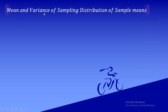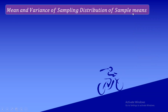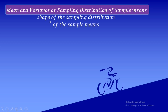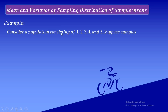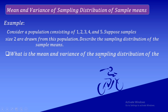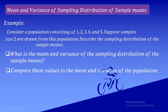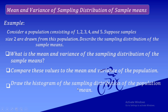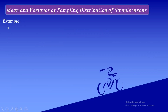This presentation is about finding the mean and variance of the sampling distribution of sample means. We will make general conclusions regarding the mean, variance, and shape of the sampling distribution of sample means. Consider a population consisting of 1, 2, 3, 4, and 5, with a sample size of 2 drawn from this population. We'll describe the sampling distribution of the sample means.